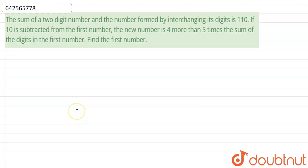Hello. In this question, we're given that the sum of a two-digit number and the number formed by interchanging its digits is 110.